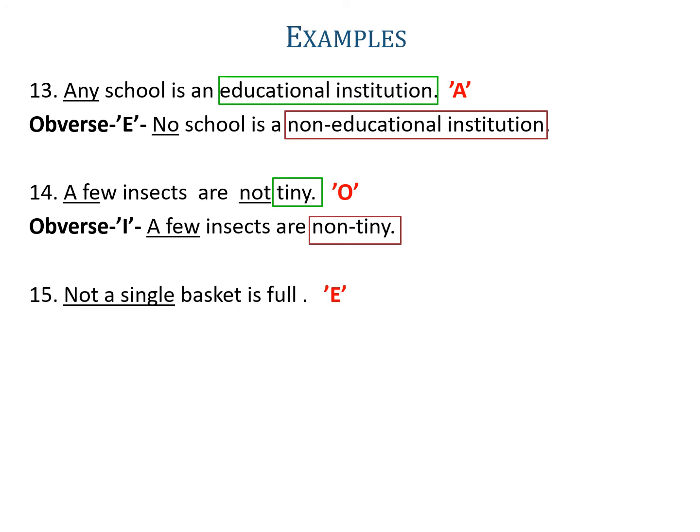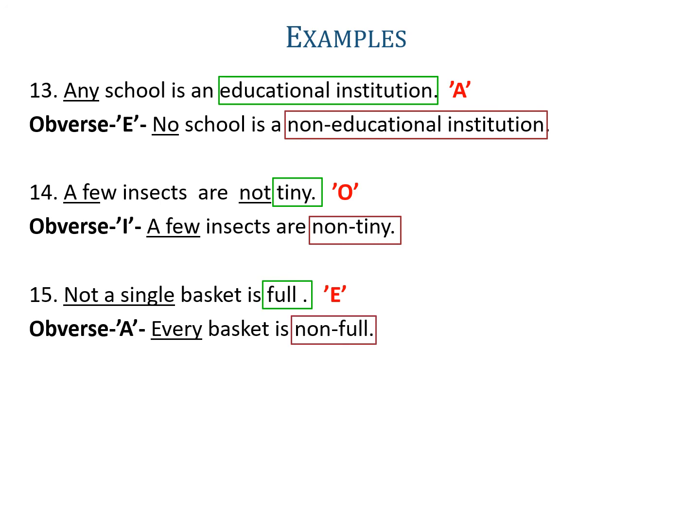Example fifteen: 'Not a single basket is full.' Not a single is used, so it is an E-proposition. It is given in singular term, so its obverse is A and it should also be in a singular term. The predicate is full, so its complementary will be non-full. So the obverse will be written as 'every basket is non-full'.